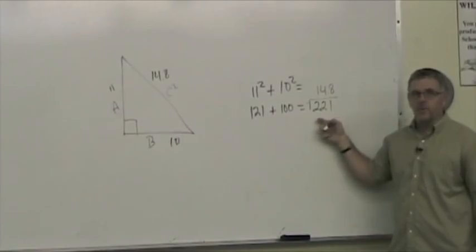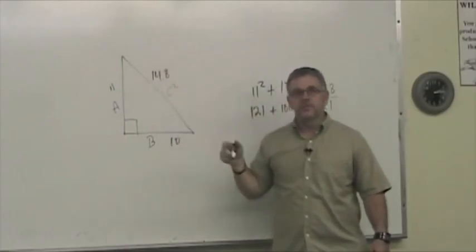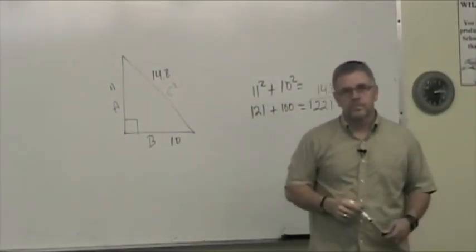In order for the kayak to fit in the shed diagonally, we need 12 feet. Well, according to our calculations, we have 14.8 feet. So yes, our kayak is going to fit in the shed in a diagonal fashion.